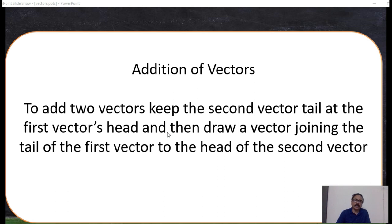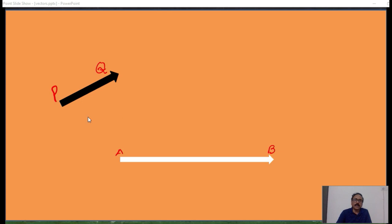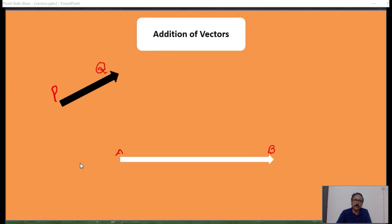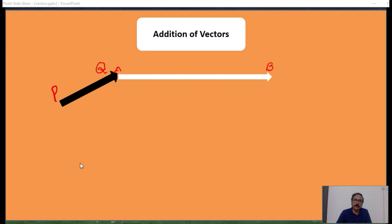For addition of vectors: every vector has one tail and one head. Place the second vector's tail on the first vector's head, then join the first vector's tail to the second vector's head — that line is the resultant. For example, to find PQ plus AB, place A on Q; then the resultant vector connects P to B.